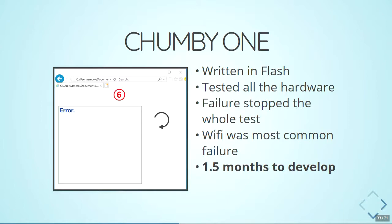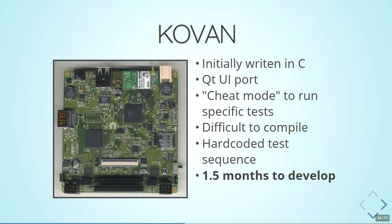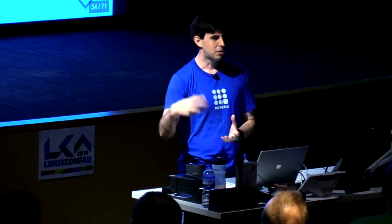Chumby One took 1.5 months to develop. When I moved to Singapore, we worked on the Covan robot controller board. Initially I did all testing in C, but then realized C doesn't have a great user interface, so we ported to Qt. We had a cheat mode you could enable by clicking certain areas that let you retest particular components - so if Wi-Fi was failing and they reworked the Wi-Fi card, you could jump directly to that test. One problem: because it was a C++ GUI, it was difficult to compile - you needed a special cross-compiling toolchain and a compiled version of libqt. We also hard-coded the test sequence, so if you wanted to move the Wi-Fi test earlier to fail fast, you had to recompile the whole thing. This also took about one and a half months to develop.